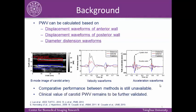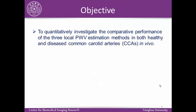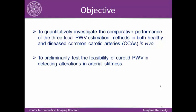Currently, clinical data to validate carotid pulse wave velocity is still limited. Therefore, the objective of this study is to investigate the comparative performance of the three methods in both healthy and diseased carotid arteries in vivo, and to test the preliminary feasibility of carotid pulse wave velocity in detecting alterations in arterial stiffness.